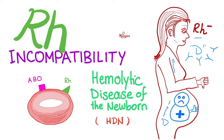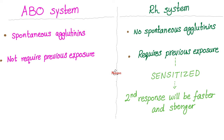The D antigen crosses the placenta and goes to the mother. The mother has never seen this D antigen before, so she will attack it with her antibodies. These antibodies can then cross the placenta in subsequent pregnancies and destroy the baby's D antigen — hashtag hemolysis. ABO incompatibility can happen in the first pregnancy, but RH usually spares the first pregnancy and attacks the second, third, fourth, and all subsequent pregnancies because it requires sensitization first.